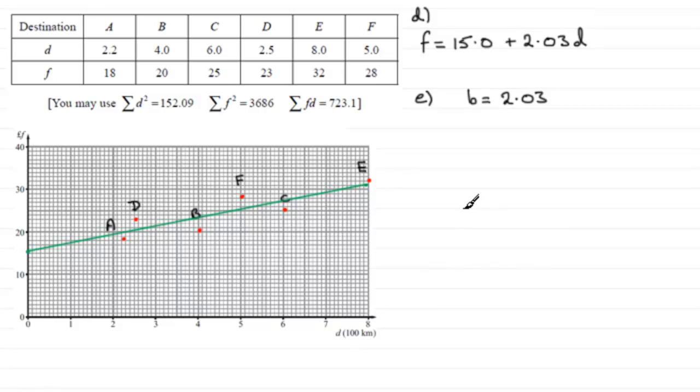So when it comes to looking at what's the meaning behind the 2.03, as I say, it's the gradient. But what we do is we look at what happens for every unit that we move across in the horizontal direction. So let us suppose I take a convenient point. Let's suppose I take this point here at the 5.